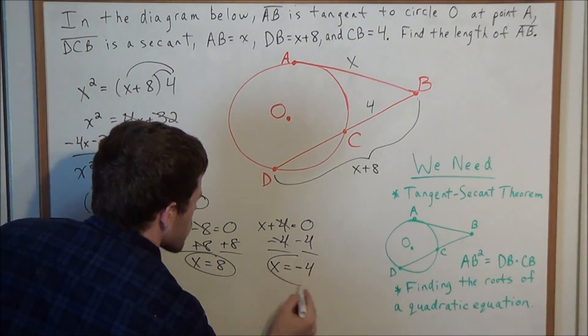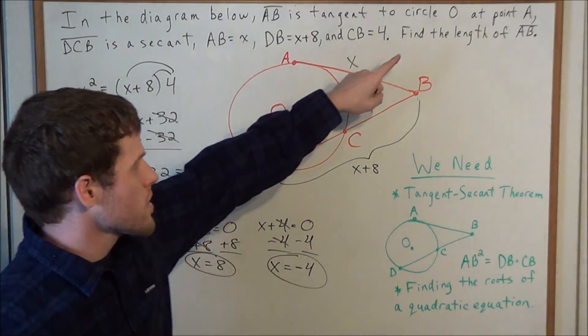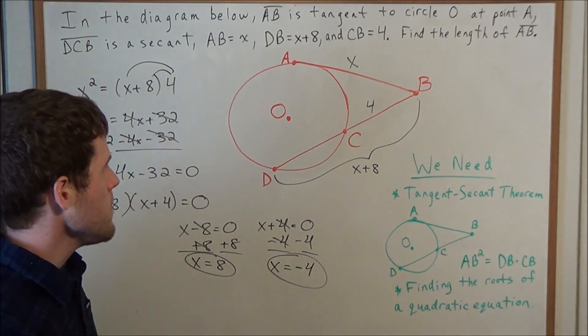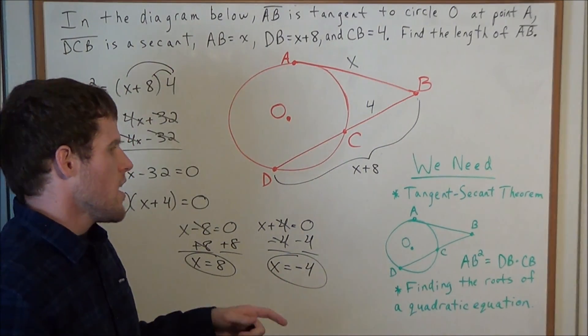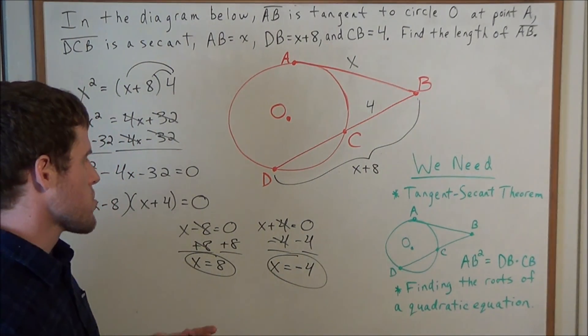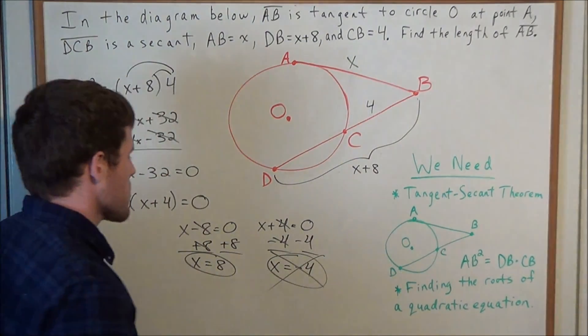But now let's think about the roots of this quadratic equation in the context of the problem. Remember, we're trying to find the length of line segment AB, which is represented by X. But could we have a negative length? No. There is no such thing as a negative length. So we're going to cross off this solution here.